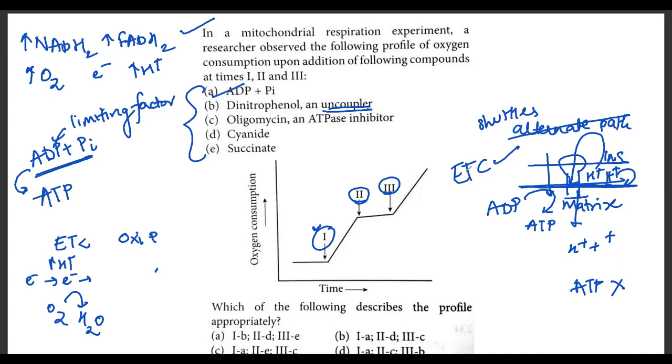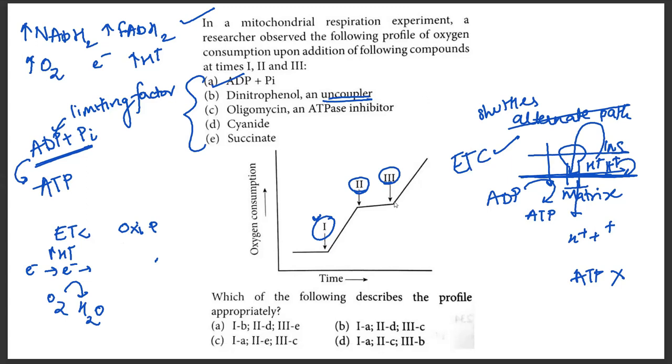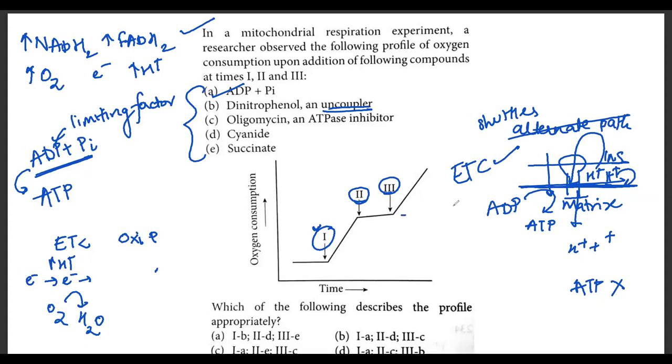Because the ETC is still continuing over time, you can still see an increasing graph. But if they had given a profile of ATP, then the ATP synthesis should be just a straight line. Whereas for one, both should increase: ATP synthesis and oxygen consumption should increase.